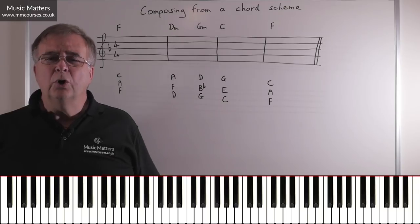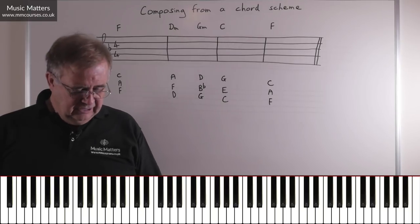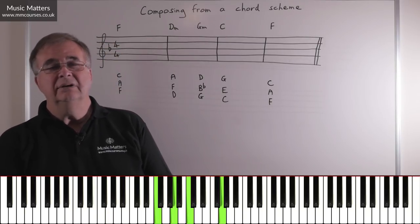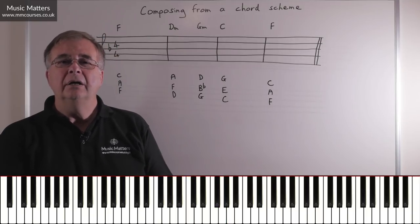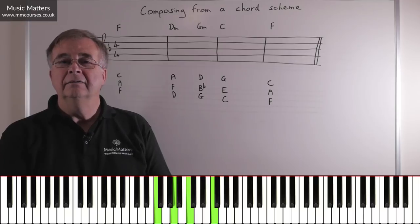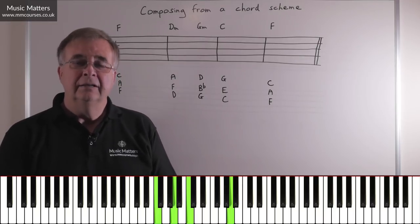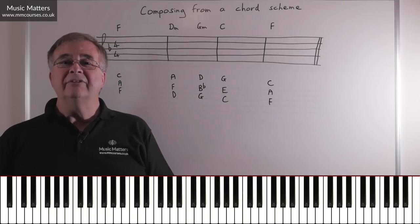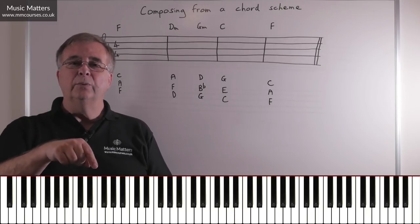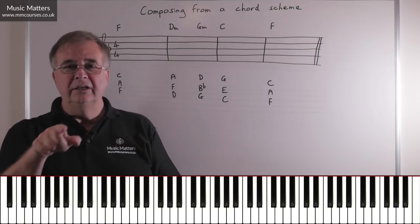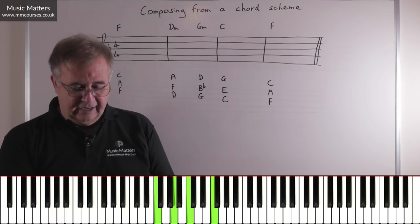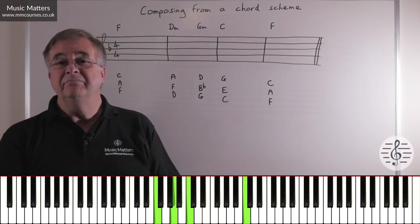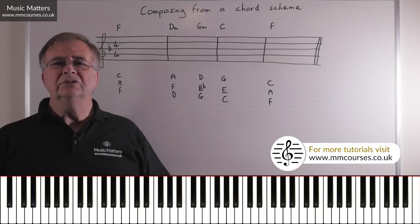You could also use something called an auxiliary note, which sounds complicated but isn't. So if I've got my chord of F, I've got an F in the melody, and I just budge up one to G and come back to F, then that G is an upper auxiliary note. Sounds quite nice. If I do one on A, if I do one on C. So the upper auxiliary sounds quite nice. You can also have a lower auxiliary. Guess what that is? Where you start with a note that belongs to the chord, you nip down one, and you come back again. So F, E, F, or A, G, A, or C, B-flat, C. So you could use passing notes. You could use auxiliary notes.